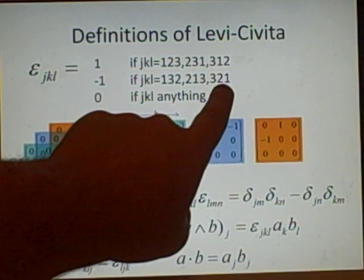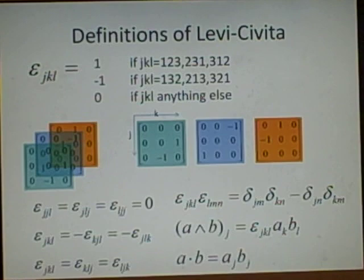Minus 1 if jkl is 132, 213, or 321. Again, it's just a cycle. Or 0 if it's anything else.